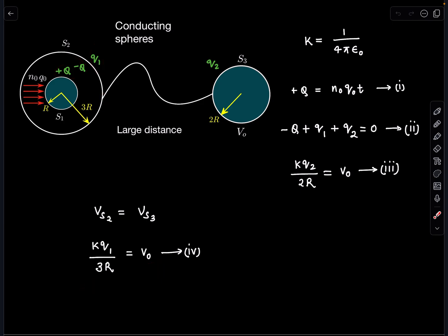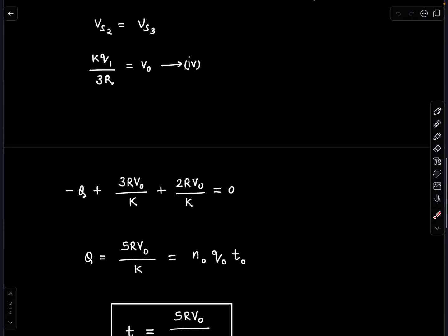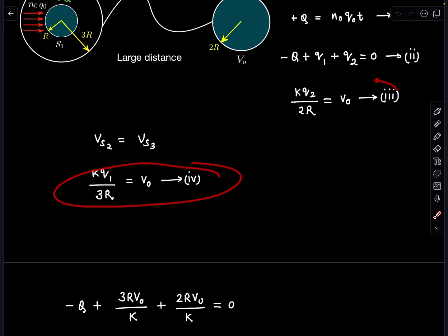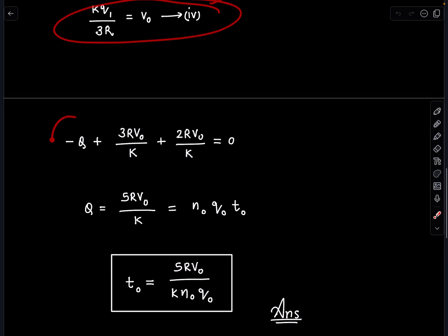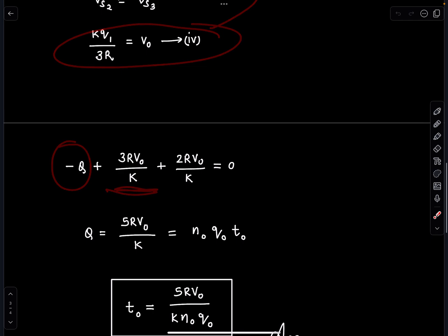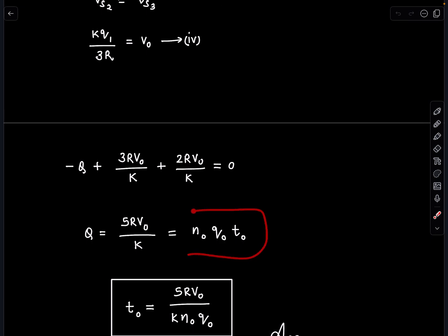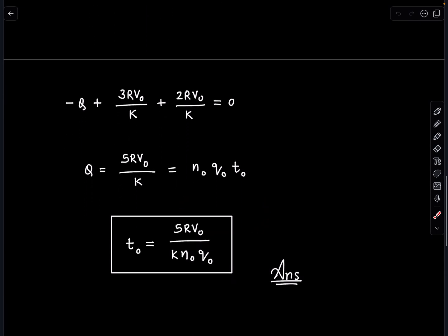Once you know this, we can easily say that if I substitute q₁ and q₂ values in equation (ii), we get the answer. -Q + q₁ + q₂ = 0, so Q = 5RV₀/K. Since Q = n₀q₀t₀, I substitute here and get t₀ = 5RV₀/(K n₀ q₀). This is the answer for this problem.